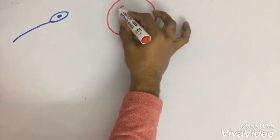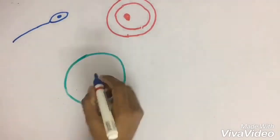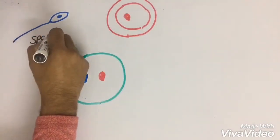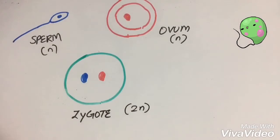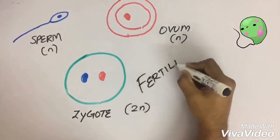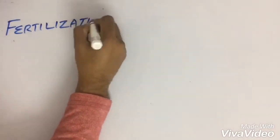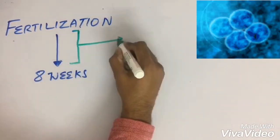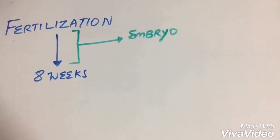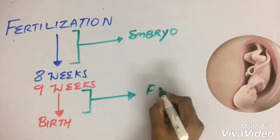When the sperm and the ovum fuse together, it forms a new cell called zygote. This process is known as fertilization. From fertilization to eight weeks after fertilization, we have to call the baby as embryo. From nine weeks until birth, we have to call the baby as fetus.